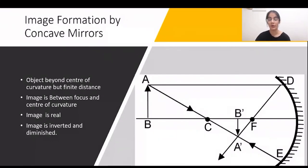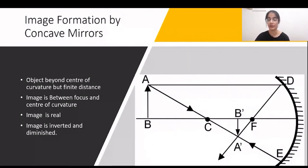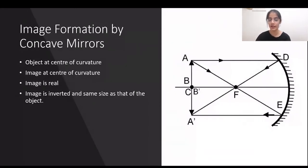Since this image is formed when reflected rays are actually intersecting — not just appearing to intersect — the image is real. It is formed in front of the mirror, is inverted, and is diminished, meaning its size is smaller than the object.